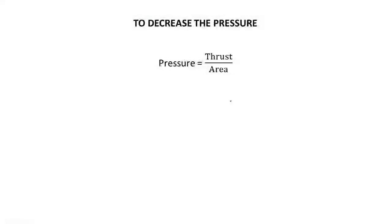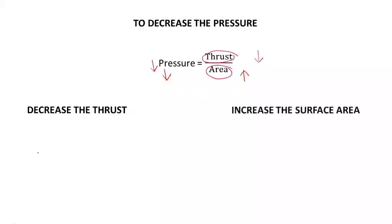Next: how to decrease pressure. Sometimes we need to decrease pressure under certain conditions. Using the formula pressure equals thrust divided by area, we can decrease pressure by first decreasing the thrust — once you decrease the thrust, the pressure decreases automatically. Or we can increase the denominator, that is, increase the surface area, and the pressure will decrease.